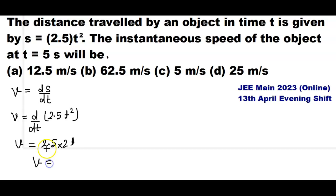So velocity v equals 2.5 times 2t, which gives us 5t. We need to calculate the instantaneous speed of the object at time t equals 5 seconds.